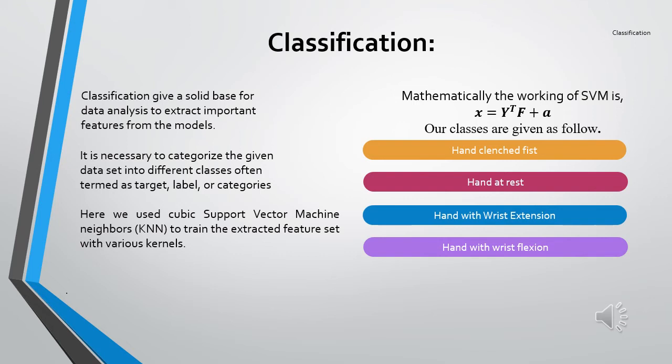Classification: Classification gives a solid base for data analysis to extract important features from the model. For the classification of extracted spectral domain features, we employed a support vector machine classifier with various kernels. SVM enables our data to classify in both linear or nonlinear domains. It works by making hyperplanes which separate the data by creating margins. In the case of hard margin, it separates the data by constructing a straight line, whereas in soft margins, the separation line is curved or depends upon the type of selected SVM. Mathematically, Y is the weight of feature vector F having B as a bias. The classes classified are: hand clenched fist, hand in rest, hand with wrist extension, and hand with wrist flexion.